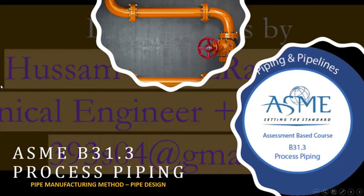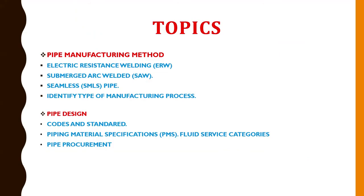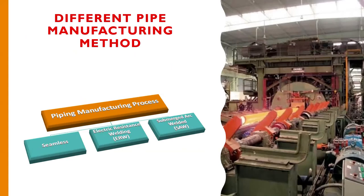Today I will talk about ASME B31.3 process piping, Part 3: pipe manufacturing methods and pipe design by manufacturing method — like electric resistance welding (ERW), submerged arc welding (SAW), and seamless (SMLS) pipe. I will also cover how to identify the type of manufacturing process if you see any pipe by its markings.